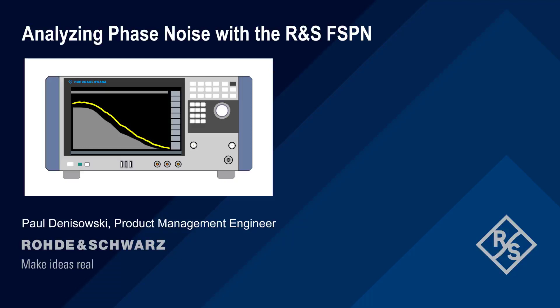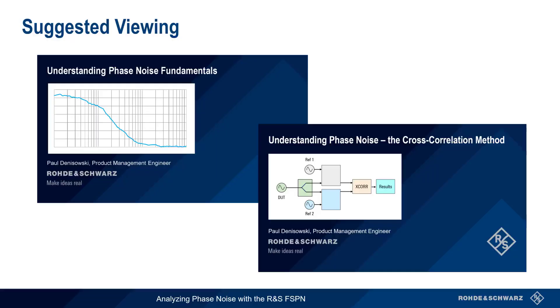Hello and welcome to this presentation, Analyzing Phase Noise with Rohde & Schwarz FSPN. In this presentation, we'll go over how to configure and interpret phase noise measurements using the FSPN Phase Noise Analyzer. This presentation assumes a basic knowledge of phase noise and how it's measured. If you're unfamiliar with phase noise or need a brief refresher, you may want to watch the presentation Understanding Phase Noise Fundamentals before continuing. If you'd like to learn more about the cross-correlation method used by the FSPN, you might also be interested in the presentation Understanding Phase Noise: the Cross-Correlation Method.